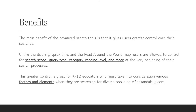So why use advanced search tools? The main benefit is that it gives users greater control over their searches. Unlike the diversity quick links and the read around the world map, users are allowed to control for search scope, query type, category, reading level, and more at the very beginning of their search process. This greater control is ideal for K-12 educators who must take into consideration various factors when searching for diverse books on abookandahook.com.